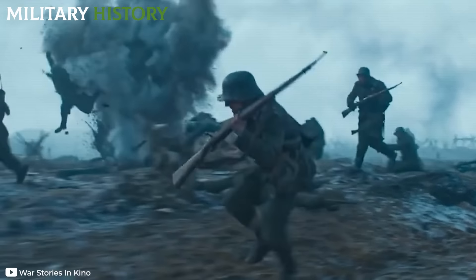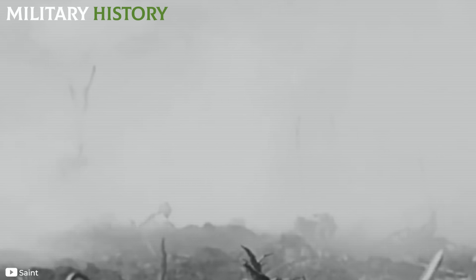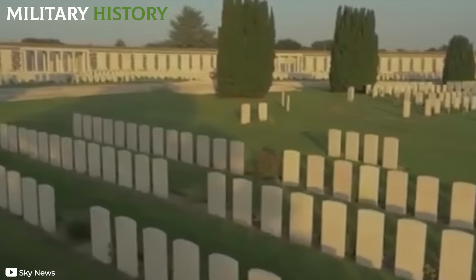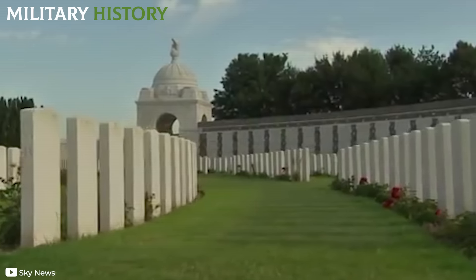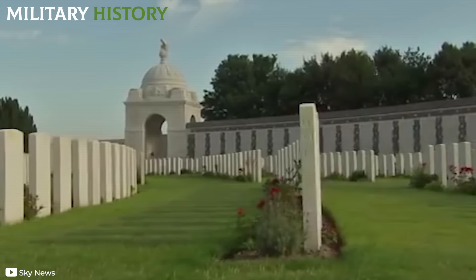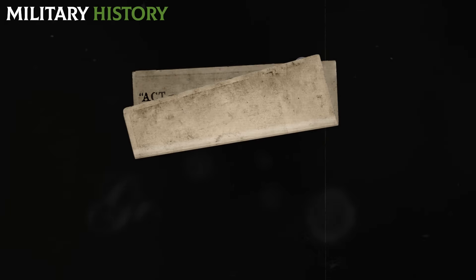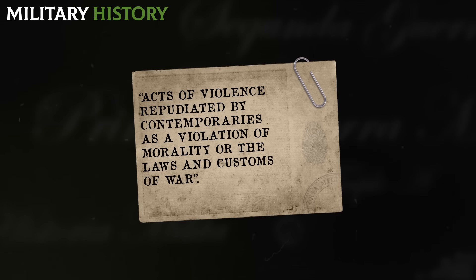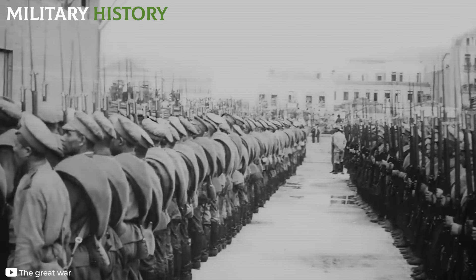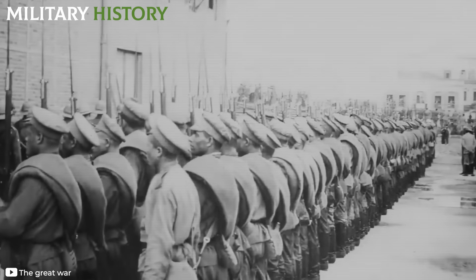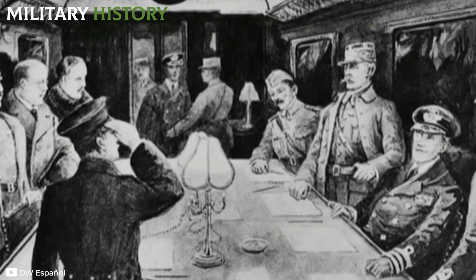The consequences of the First World War were profound and long-lasting. During the relentless four years it lasted, more than 8.5 million soldiers perished on the battlefields, but the tragedy was not limited to the military ranks. A devastating 13 million civilians perished, mostly from famine, resource deprivation, and disease. This colossal misery was compounded by the barbaric acts explored in this video, officially noted as acts of violence repudiated by contemporaries as a violation of morality or the laws and customs of war. The conflict also caused radical political changes, with the disappearance of empires such as the Austro-Hungarian and the Ottoman, and new states emerged in their place, but the borders drawn in the Treaty of Versailles sowed the seeds of later conflicts.